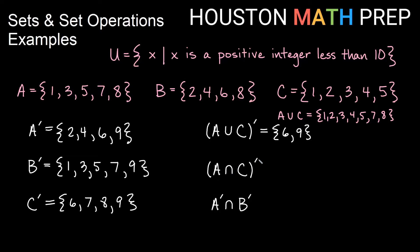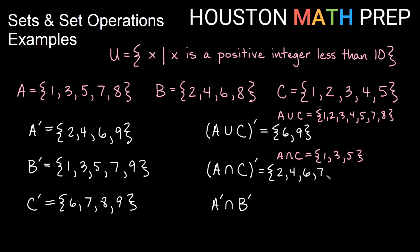A intersection C complement will be a bit different. We need elements first in parentheses that are in A and also in C — in both. A intersect C gives us 1, 3, and 5. Now we want the complement of that — all things in the universal set not in A intersect C. So that would be 2, 4, 6, 7, 8, and 9.